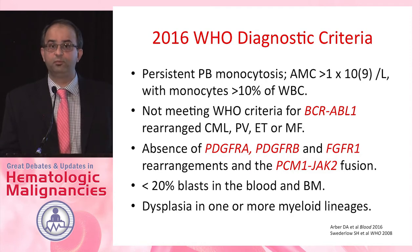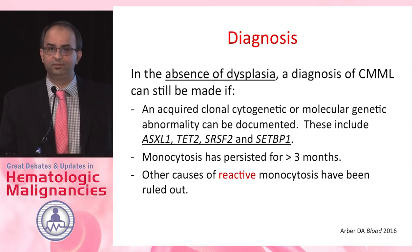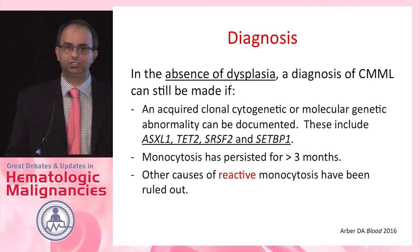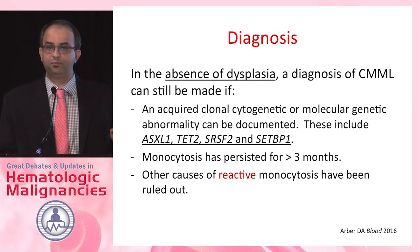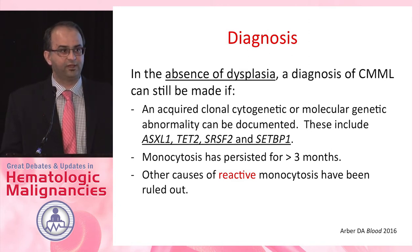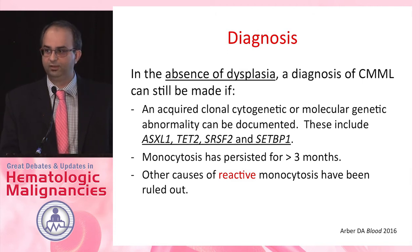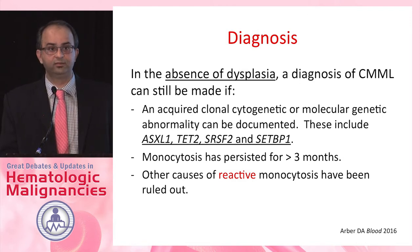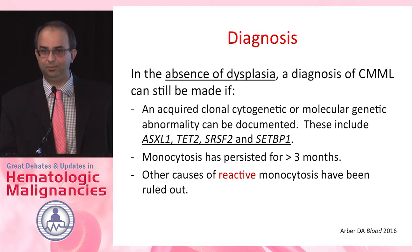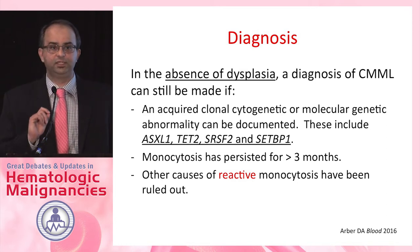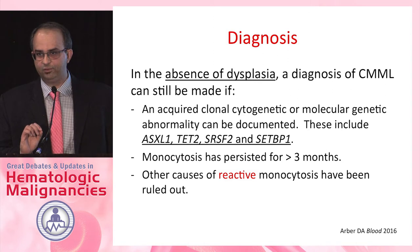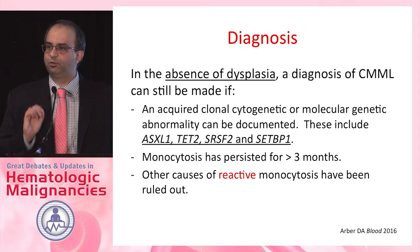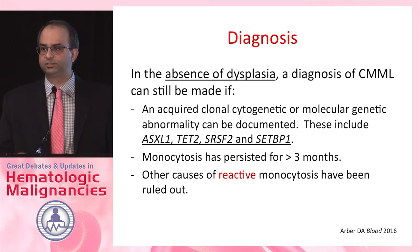Dysplasia may or may not be present. In the absence of dysplasia, you can still diagnose CMML provided there is a clonal cytogenetic or molecular abnormality. This is the first time molecular genetics was incorporated into the diagnosis of CMML, including gene mutations involving ASXL1, TET2, SRSF2, and CEBPA. None of these gene mutations are specific for CMML, however the TET2/SRSF2 signature usually skews hematopoiesis in the direction of monocytosis.